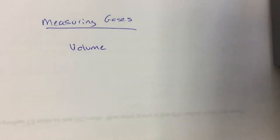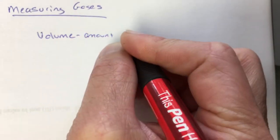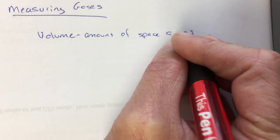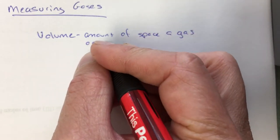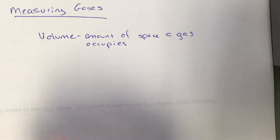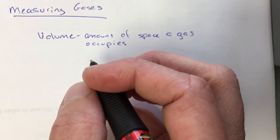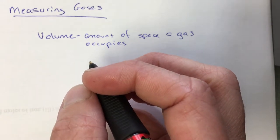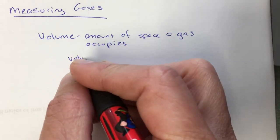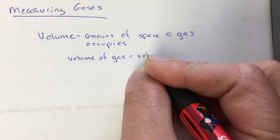We'll measure gases in four main ways, one of which will be volume. Volume is the amount of space a gas occupies. As far as gases are concerned, one of the things we talked about is how gases are the only substance that can assume the volume of its container. So the volume of a gas is equal to the volume of the container.